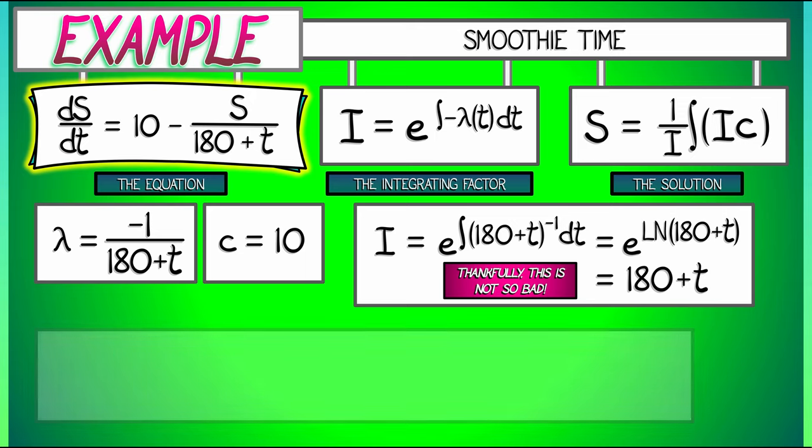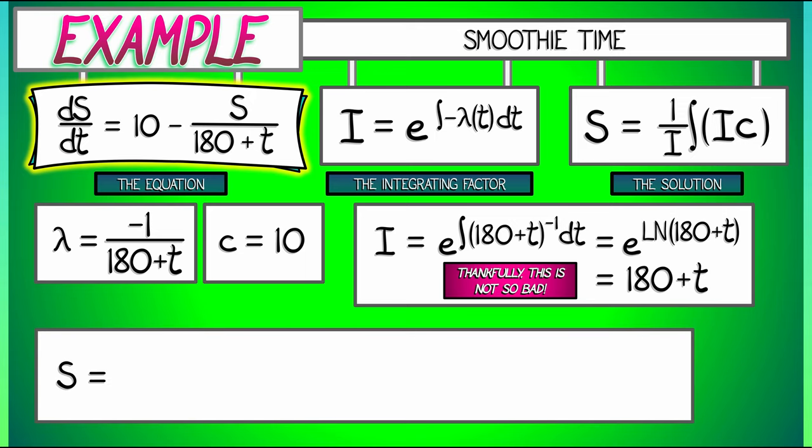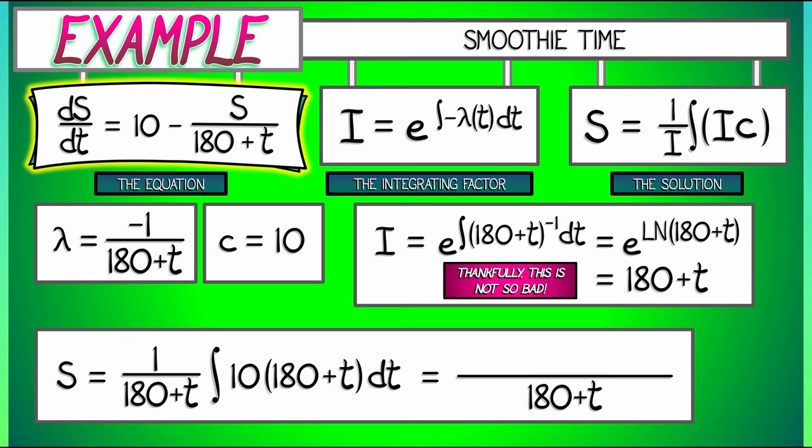And it's not going to be so bad to do this integration. We can solve for S as one over the integrating factor (180 plus t) times the integral of C, that's 10 times quantity (180 plus t) dt. That gives us for a final answer over (180 plus t) - that numerator being 1800t and then 10 times t integrated, that's 10t squared over 2, or 5t squared, plus C.